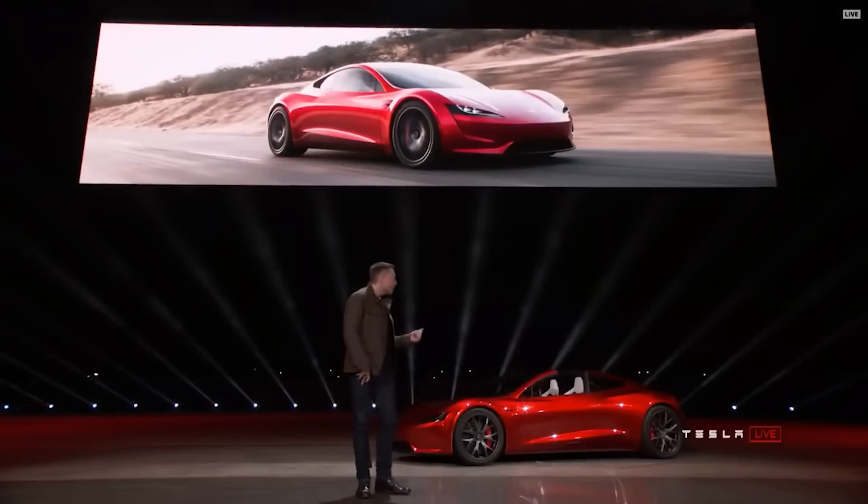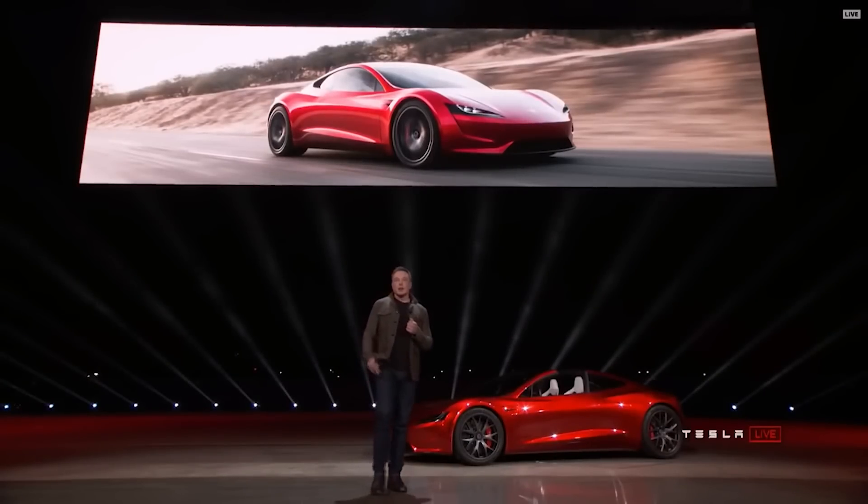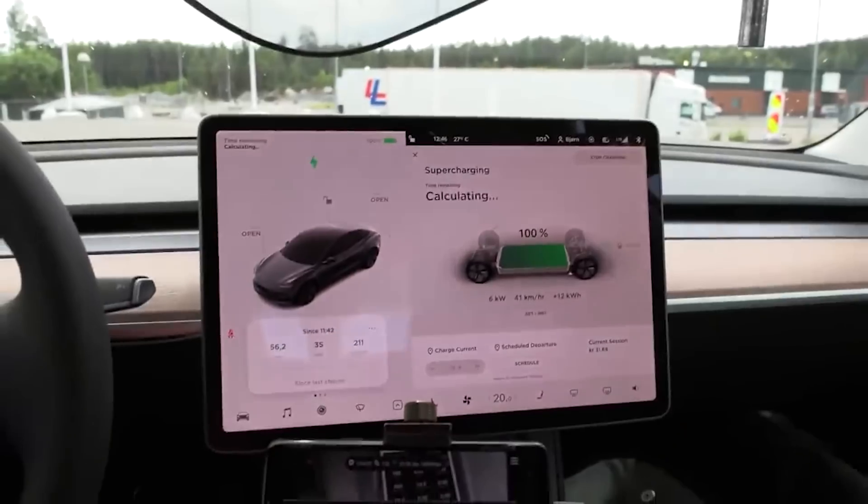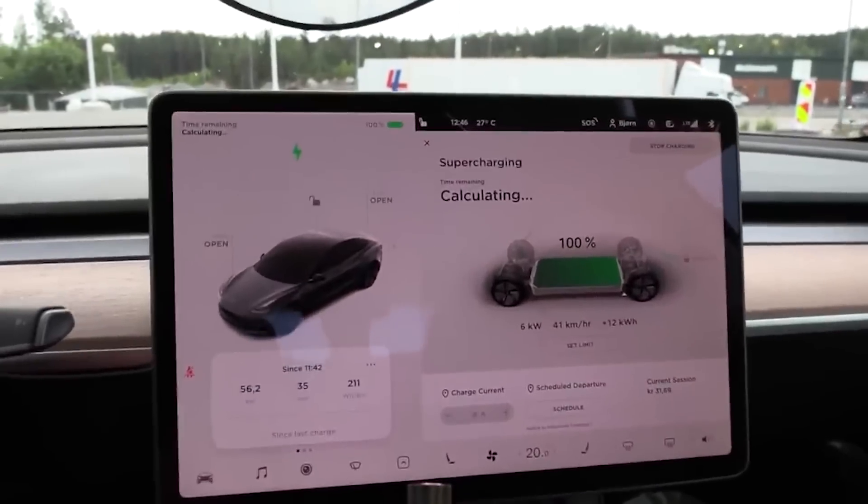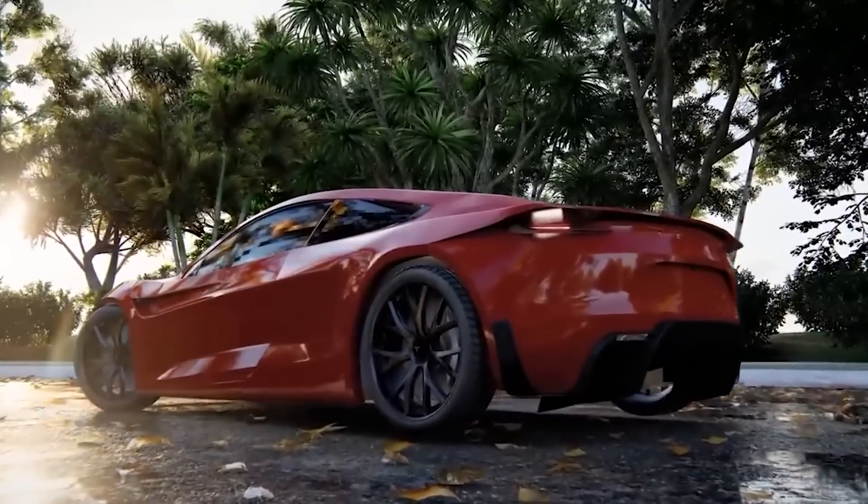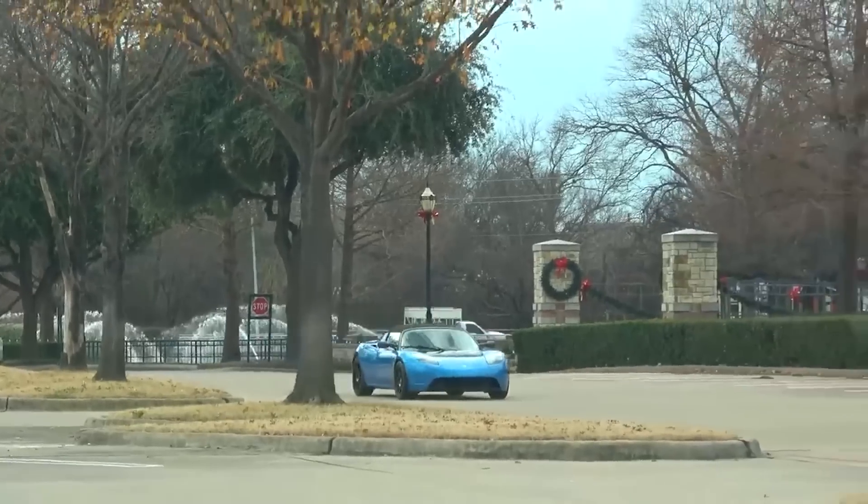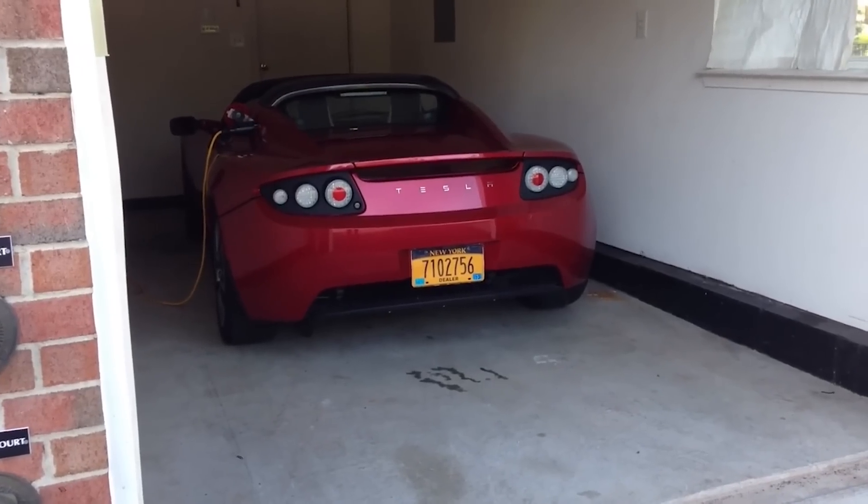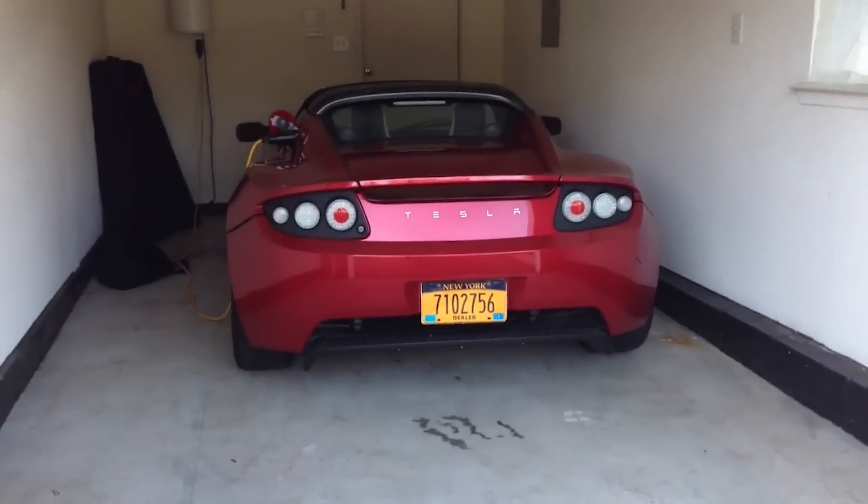Before Tesla showed the world what lithium-ion batteries can do by putting them in its first car, the Roadster, electric vehicles were severely limited in range, making them impractical. However, the Roadster showed everyone that an electric car, especially a high-performance one, could last more than 200 miles before it needed to be charged.